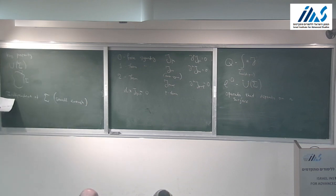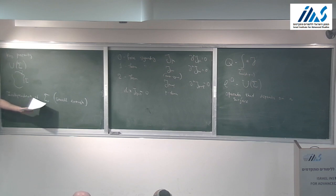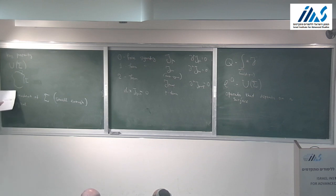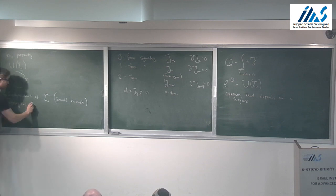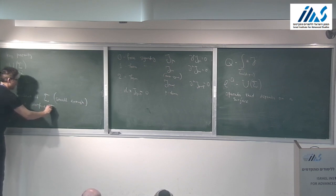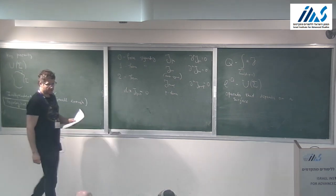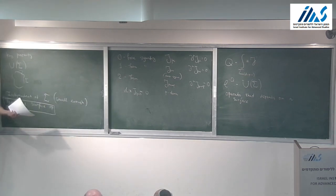Quantum field theories could have many such operators. Some operators are trivial, so we wouldn't consider them genuine. Such operators are called topological surface operators. They must be distinguished from trivial operators that don't depend on anything. Topological surface operators are independent of the surface for small enough deformations, but for big deformations you could get something non-trivial.